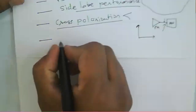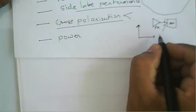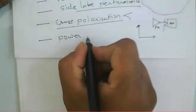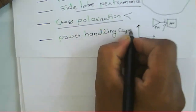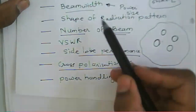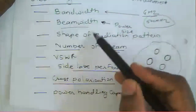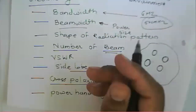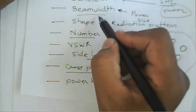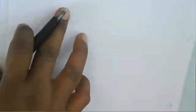For an antenna to provide sufficient gain, a power amplifier is needed, and its output will be high power. The antenna must be designed to handle that power level. So we need to know the power handling capacity of the antenna. In summary, the electrical requirements for a satellite antenna include: bandwidth, beam width, shape of the antenna pattern, number of beams, VSWR, side lobes, and power handling.